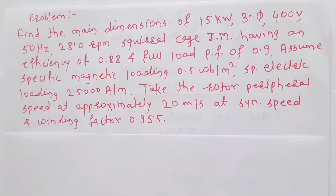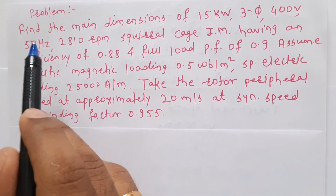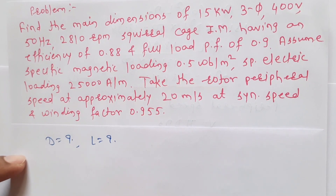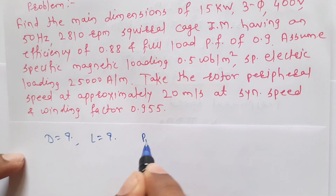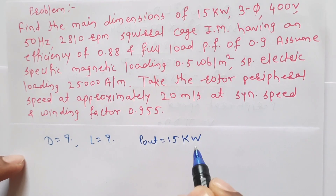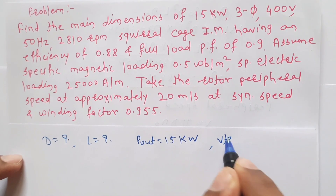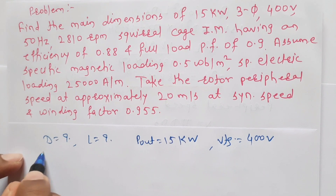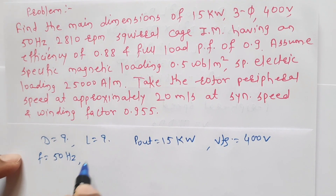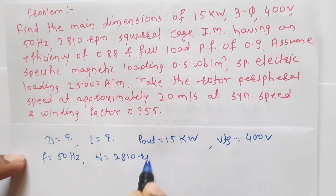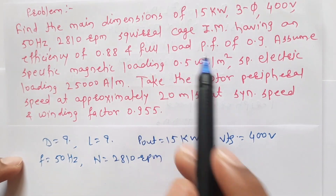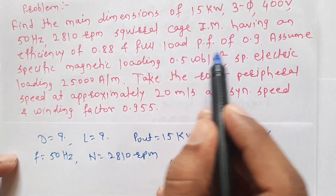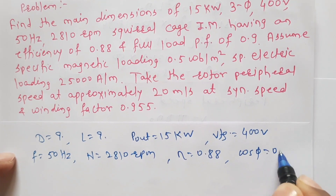First we will read the statement of the problem and write given data. Find the main dimensions — that is D and L, diameter and length of stator core — of a 15 kilowatt, 3-phase, 400 volt, 50 hertz, 2810 RPM squirrel cage induction motor, having an efficiency of 0.88 and full load power factor cos phi equal to 0.9.